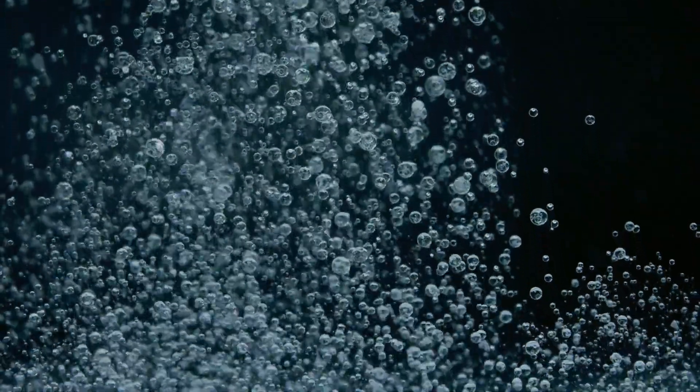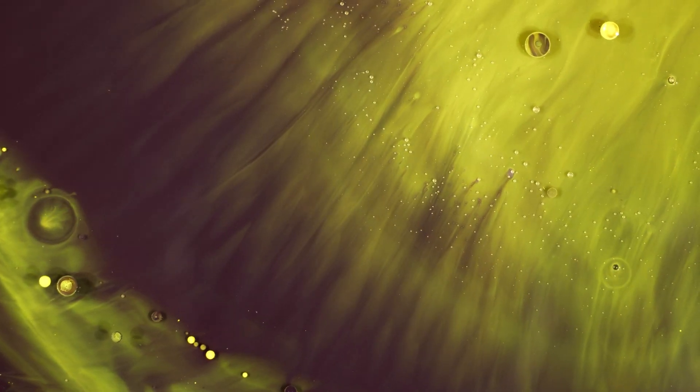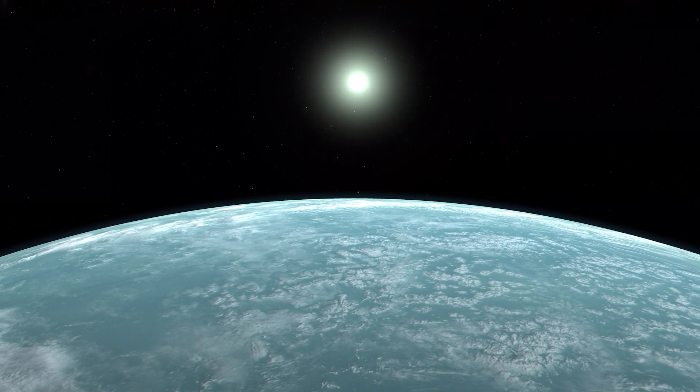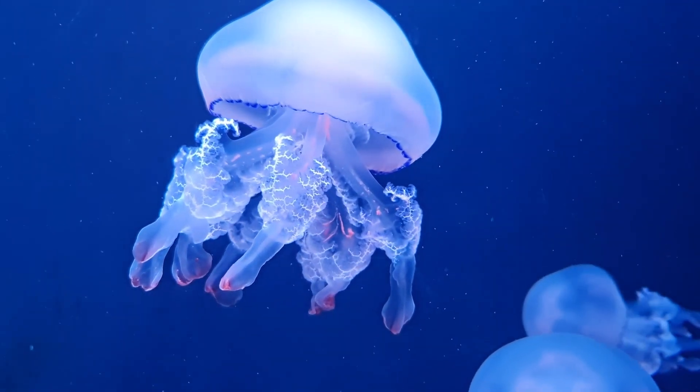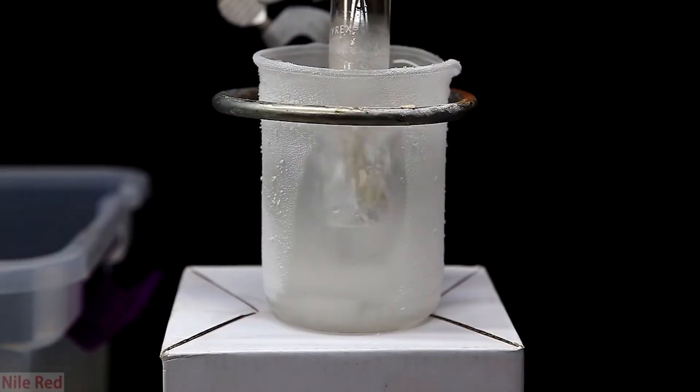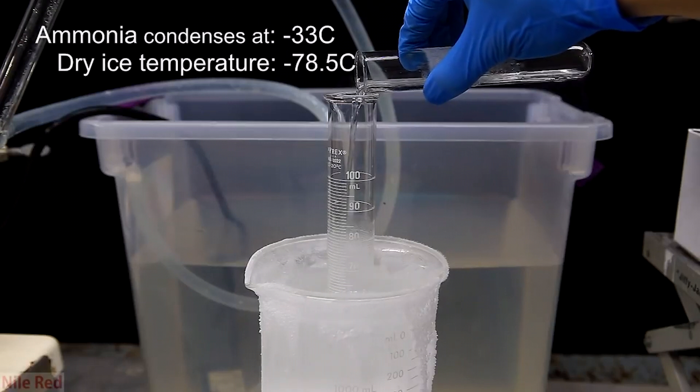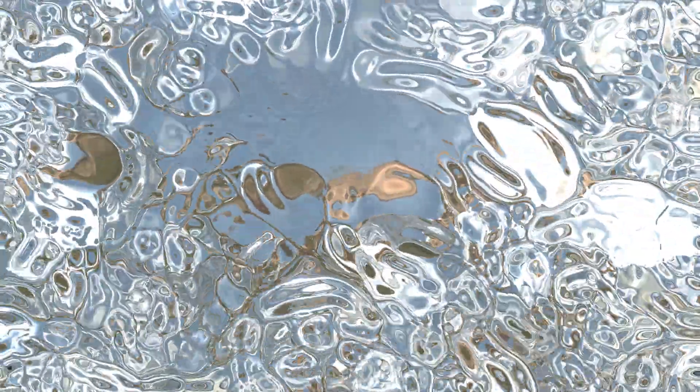For life to thrive in a different substance, the substance would need to possess either a broad range of temperatures at which it can remain in liquid form or be present on a planet where the temperature doesn't fluctuate much throughout the year. For example, water remains in its liquid state between 0 and 100 degrees Celsius. Ammonia, on the other hand, remains in liquid form between negative 77.7 and negative 33.3 degrees Celsius, which is a relatively broad range of 44.4 degrees Celsius.